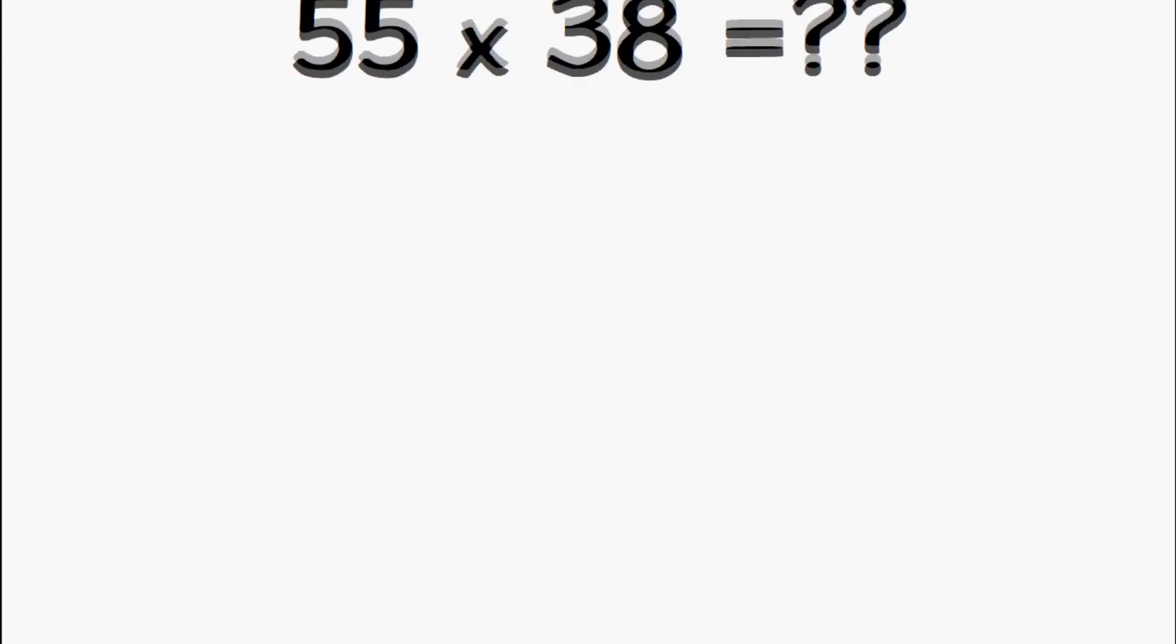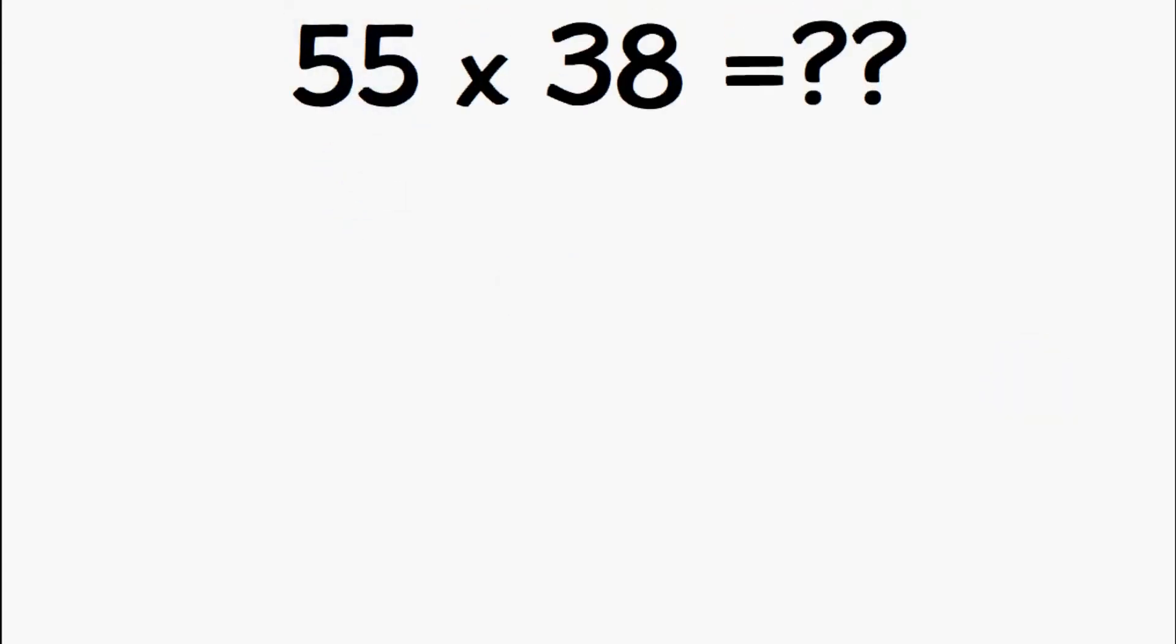Let's use this example: we have 55 times 38. The first thing we're going to do is draw a box which looks like this. Then we're going to divide the box depending on how many numbers we have in the equation. So we've got four numbers so we're going to divide the box into four like this.